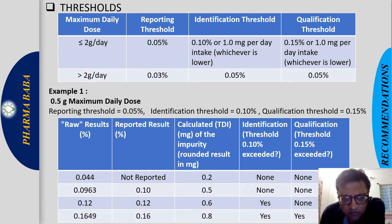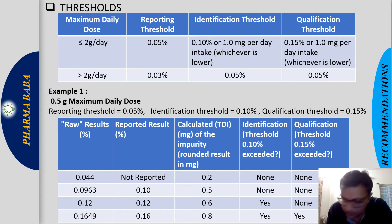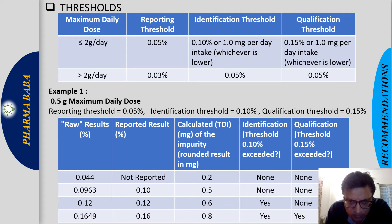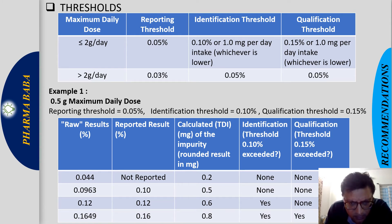The total daily intake of each impurity is calculated by multiplying the maximum daily dose by the impurity percentage. For 0.5 grams × 0.05% = 0.25 mg; the 0.04% impurity gives approximately 0.2 mg. For the reported impurities: 0.10% gives 0.5 mg, 0.12% gives 0.6 mg, and 0.16% gives 0.8 mg — these are the total daily intakes of the respective impurities.